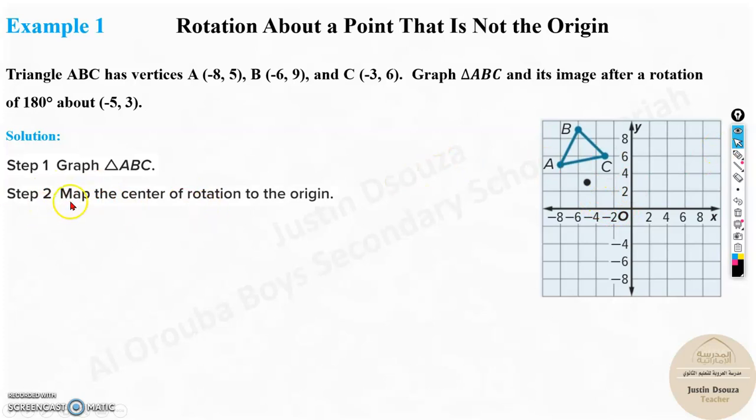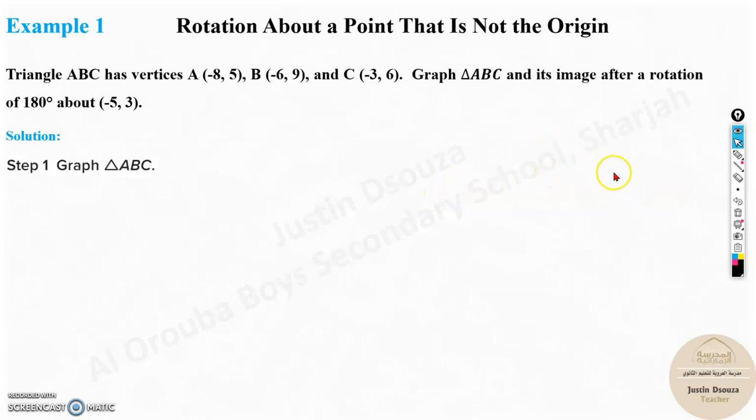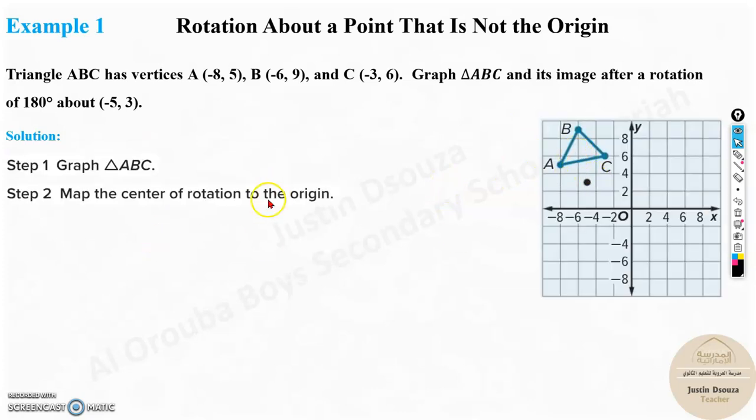Now first we need to map the center of the rotation to the origin. That means just get this point towards the center. Or we need to find where it is exactly located from the center. And we need to change these vertices. That means since it's moved over here, all these will be moved somewhere over here. You translate it first. Why? Because the formulas which we just saw are only about the origin. We don't have any formula for otherwise.